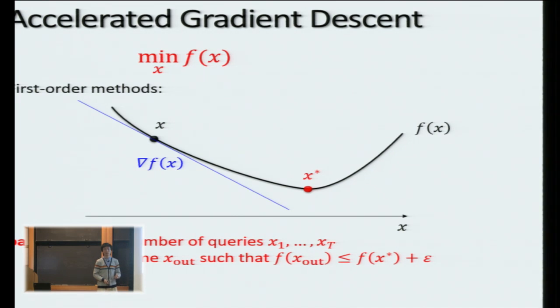then the goal of first-order method is to minimize this number of queries in order to eventually produce some output point so that its objective distance to the minimizer is, say, very small, something epsilon-ish. So that is the model of first-order method,